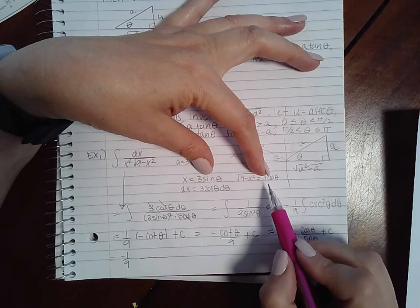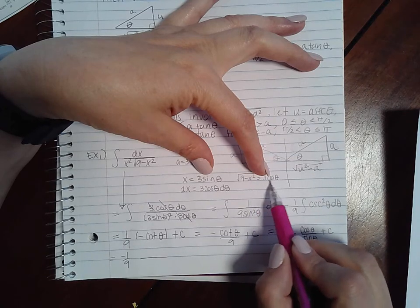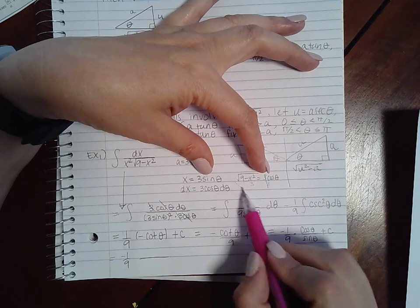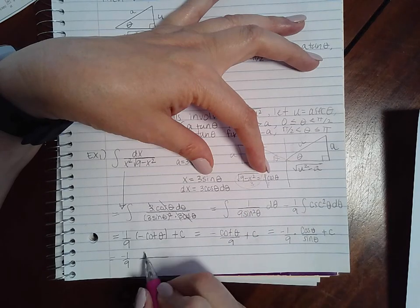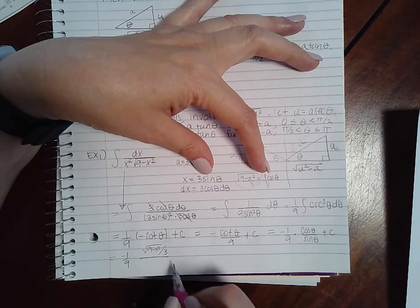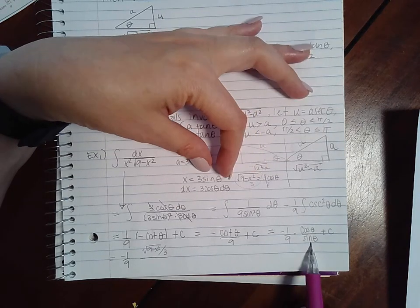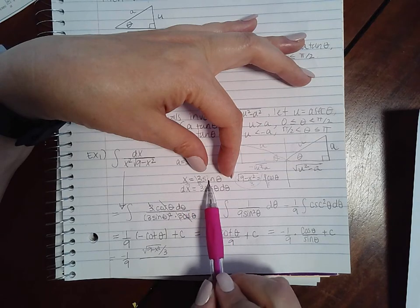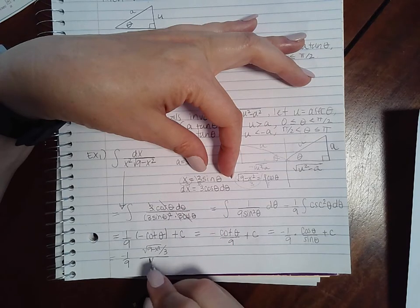When I back substitute this, for cosine I'm going to divide both sides by 3, which means I'm going to replace cosine with this fraction here - square root of 9 minus x squared over 3. For sine x, I'm also going to divide both sides by 3, so I'm going to replace sine of x with x over 3.